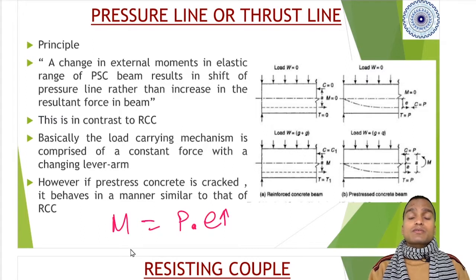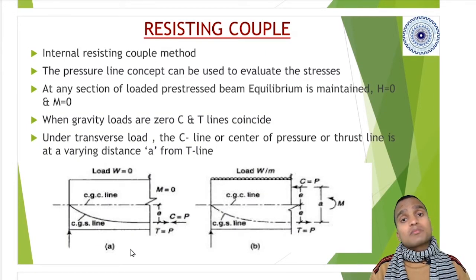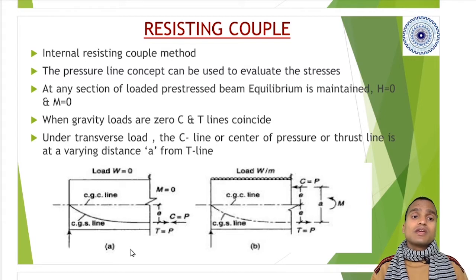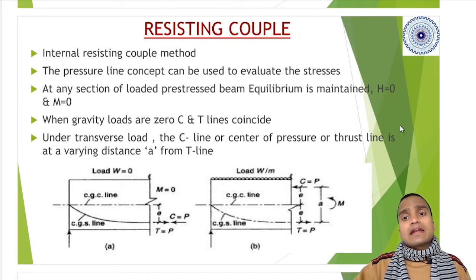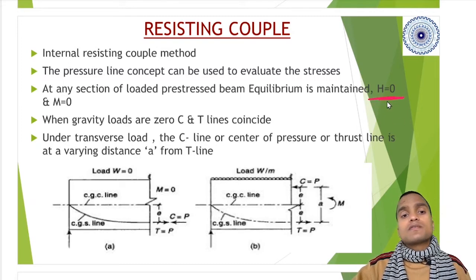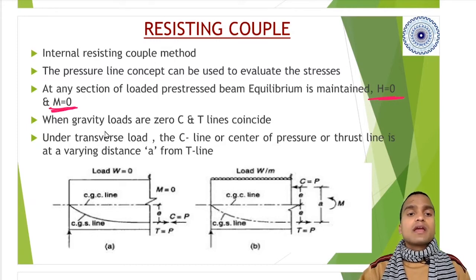If pre-stressed concrete is cracked, there will be pre-stress loss and it behaves in a similar fashion like RCC. The resisting couple has one compression line and one tension line - between these two there is internal resisting couple. The pressure line concept can be used to evaluate the stresses. At any section of loaded PSC beam, equilibrium is maintained - summation of horizontal forces equals zero and summation of moments equals zero.